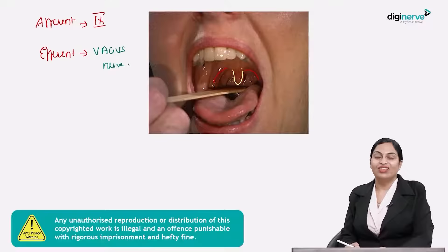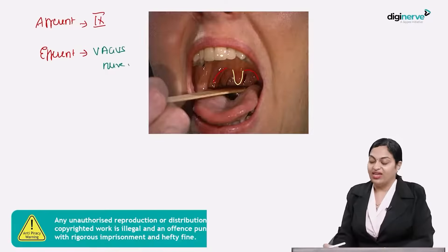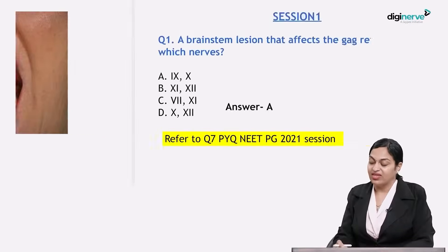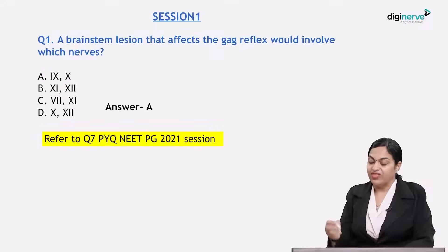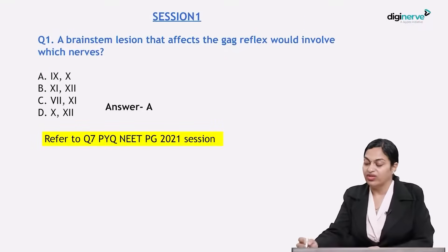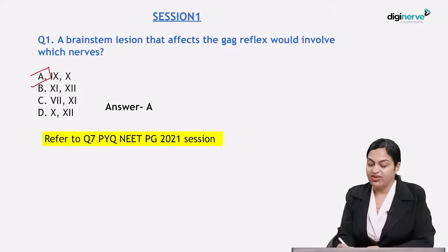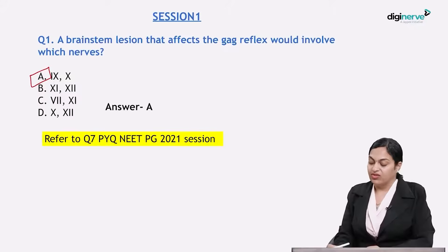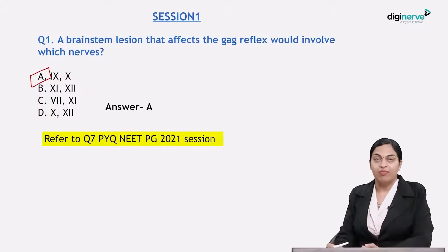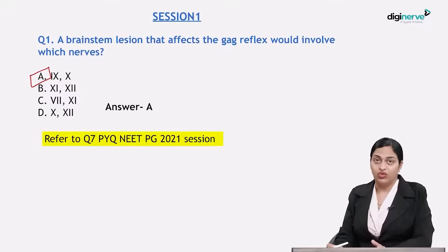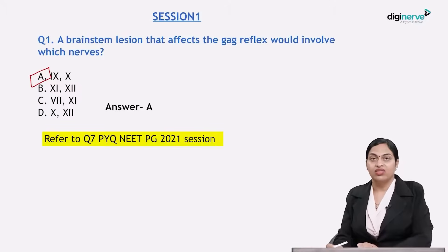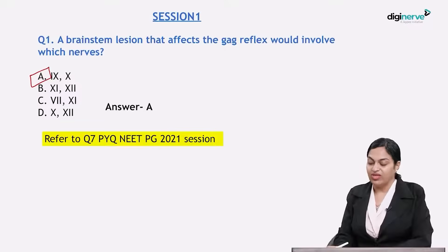So the afferent for the gag reflex is the glossopharyngeal nerve and the efferent is the tenth cranial nerve. Therefore, the brain stem lesion that affects the gag reflex would involve nerves 9 and 10. In the NEAT PG 2021 session we also discussed what happens with injury to the 9th or 10th nerve in terms of the gag reflex — please go through it.